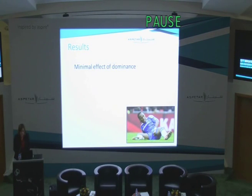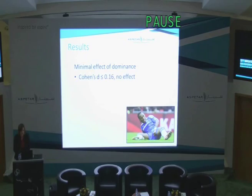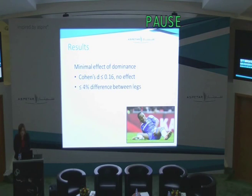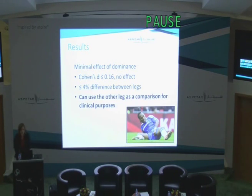In terms of the results, when we compared the dominant and non-dominant legs, there was minimal effect of dominance in this cohort. The Cohen's D was less than or equal to 0.16, which has no effect, and to give that in real terms, there was less than 4% difference between the legs — for some of our measures, less than 1% difference. As a clinician, that gives you confidence you can use the other leg as a comparison if an athlete presents to you with unilateral groin pain.